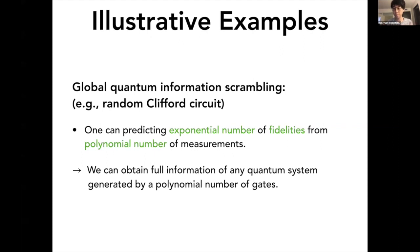The implication of this is that we can obtain the full information of any quantum system generated by a polynomial number of gates, essentially meaning that after you apply this random Clifford circuit rotation to the measurements, you can obtain all the information of basically any physical states that you could create.